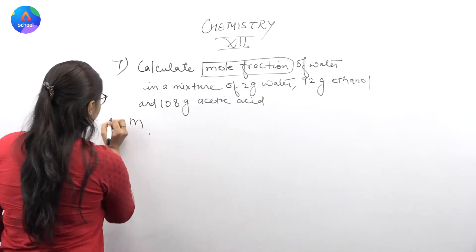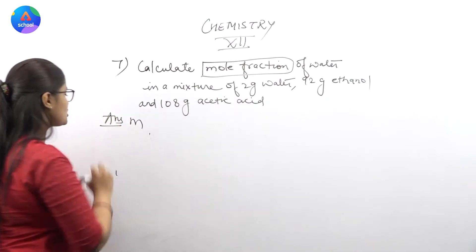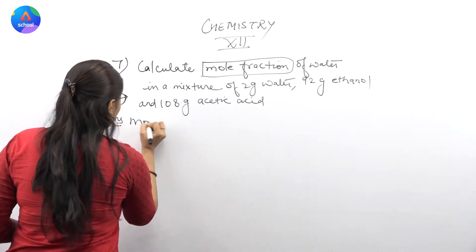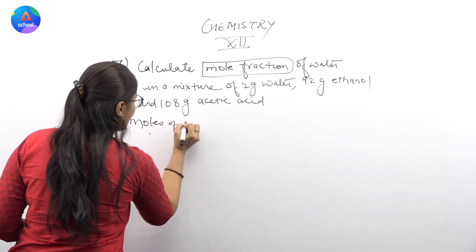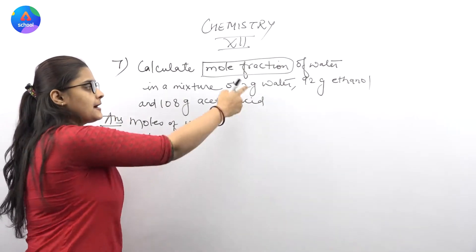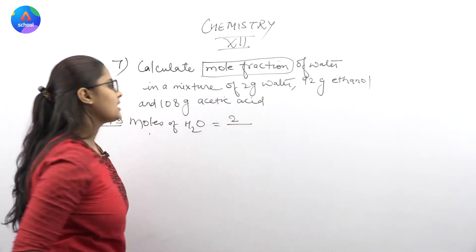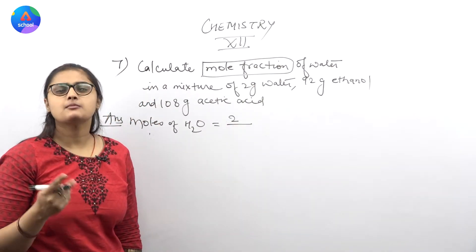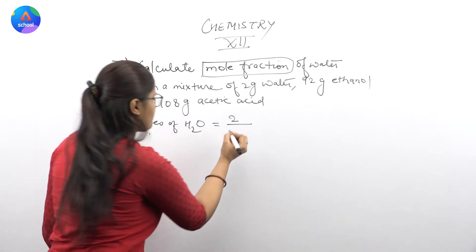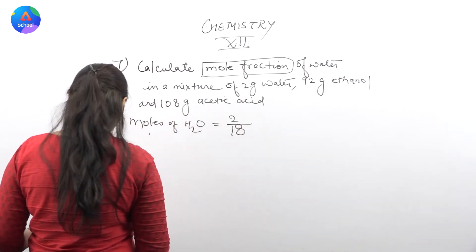So moles. How much moles of water? 2 gram. Okay, water molecular weight is 18. Put it here. Next one.